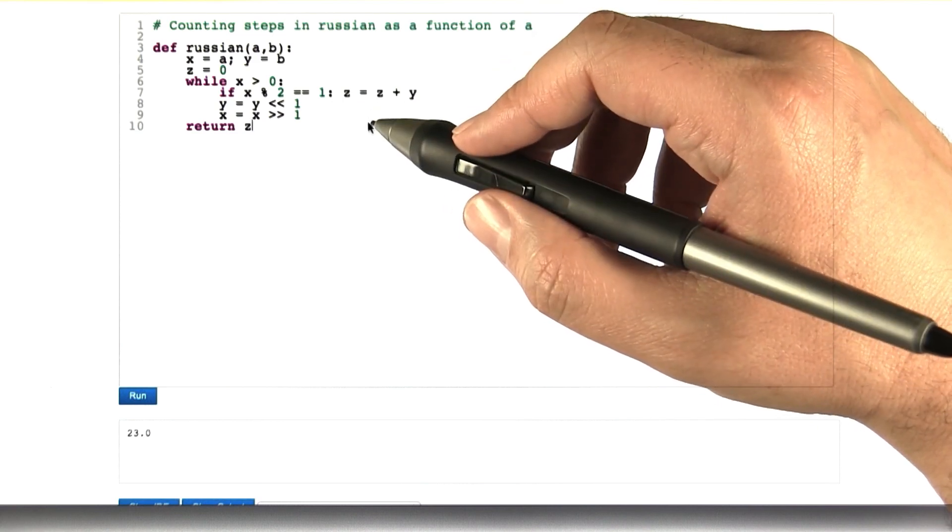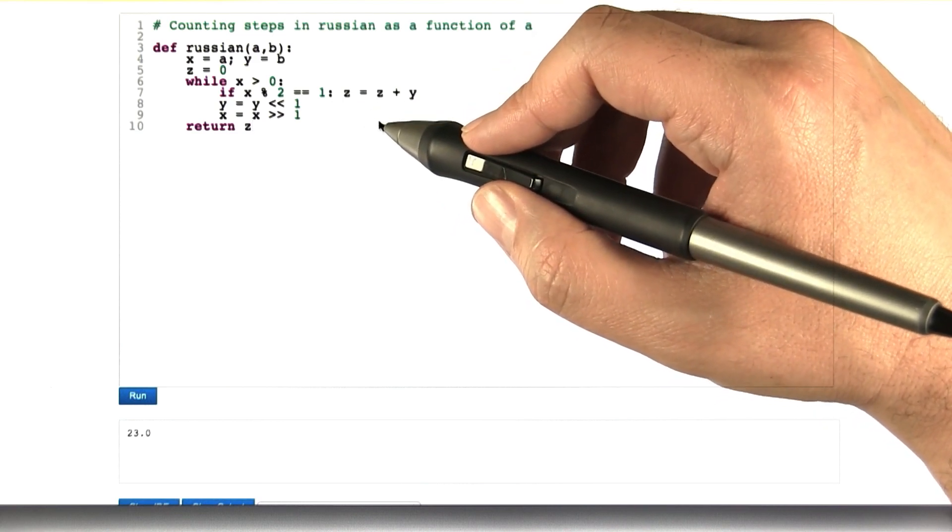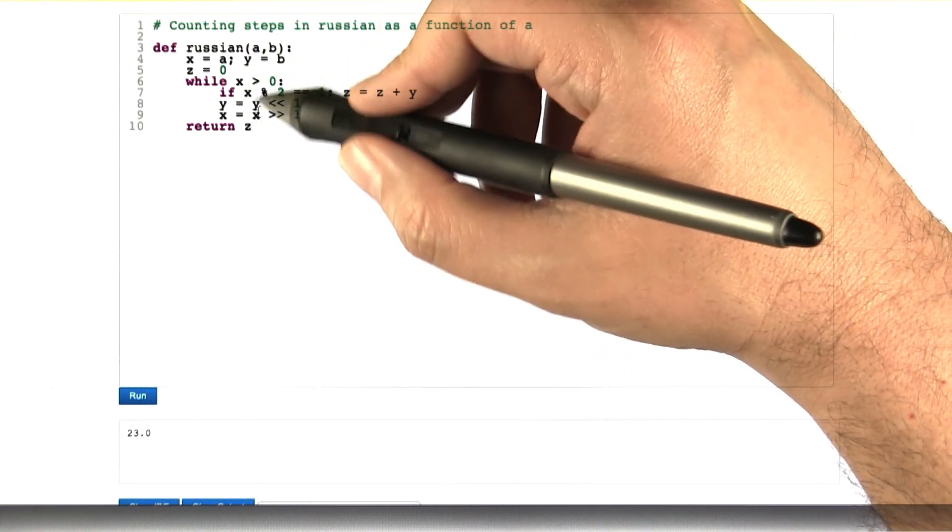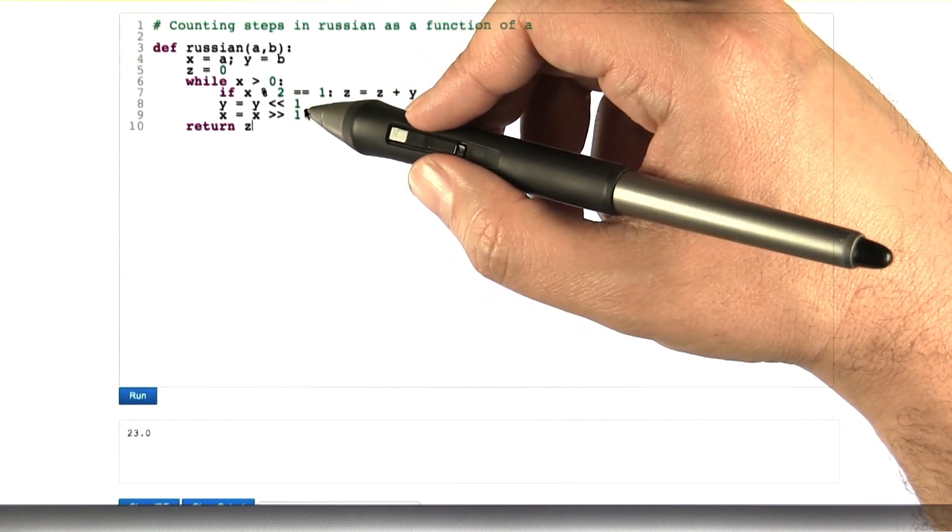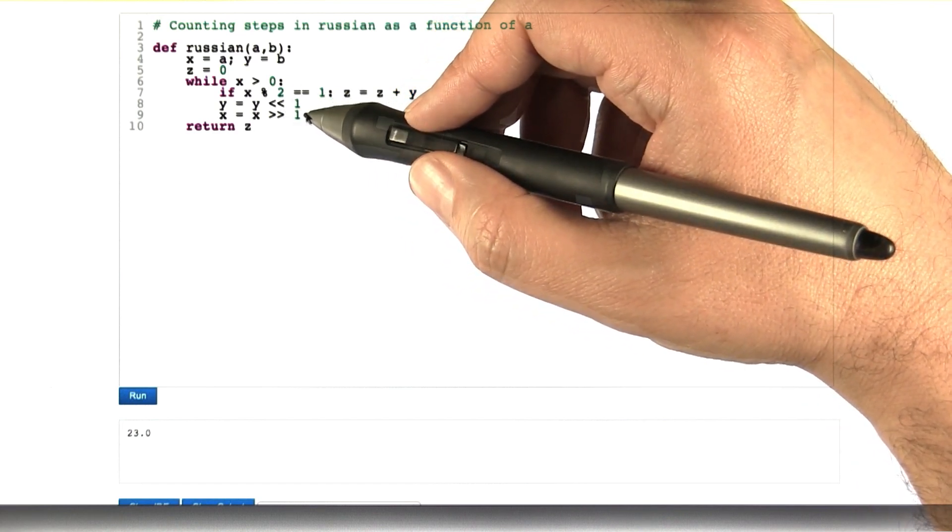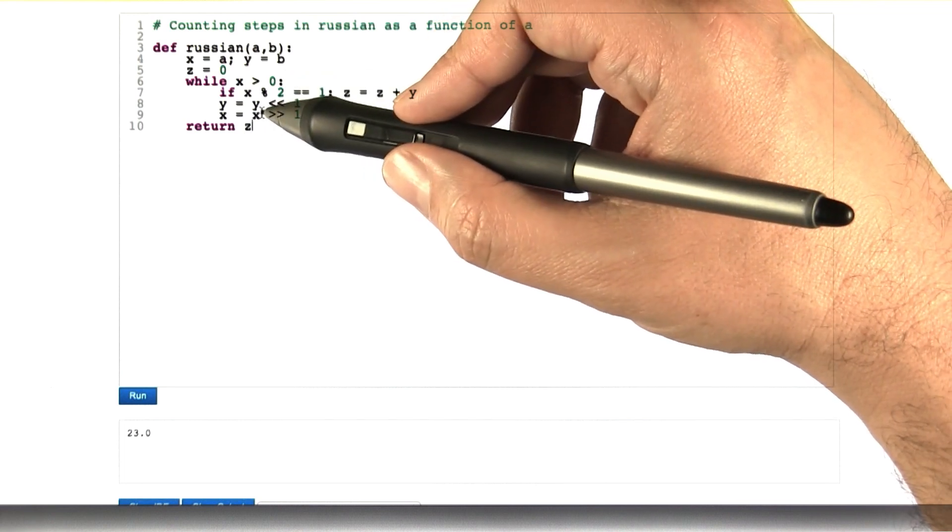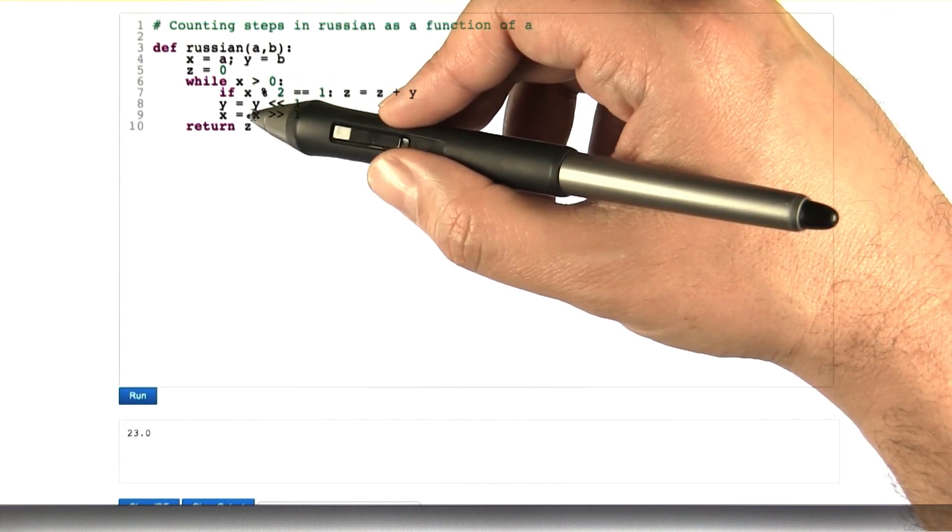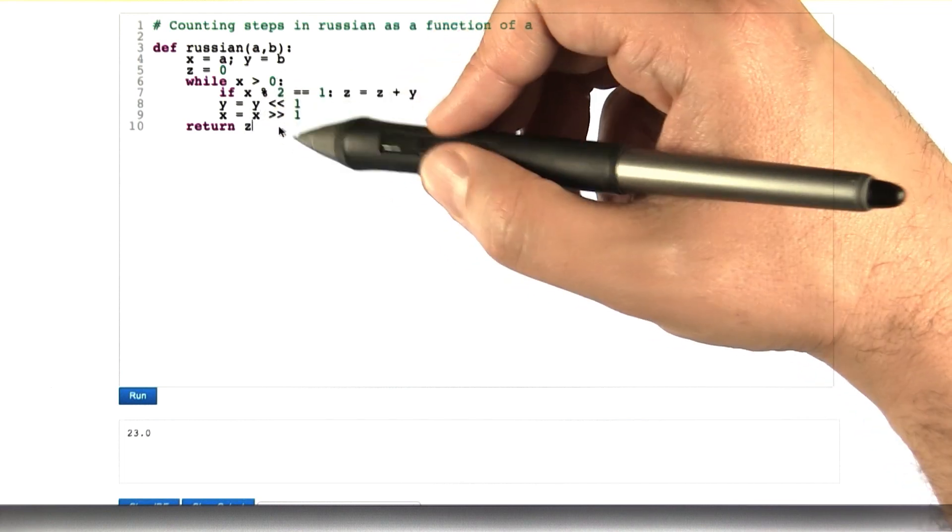The key step in analyzing the number of steps that this algorithm is going to take is understanding how many times this loop is going to be executed. The number of times the loop is going to be executed is going to be the same as the number of times that it takes to divide x in half before you get down to 0.